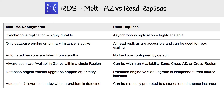When upgrades are occurring, it's going to happen on the primary database for Multi-AZ. When upgrades occur with Read Replicas, it's going to be independent from the source instance. And lastly, for failover: automatic failover will happen to the standby on Multi-AZ. For Read Replicas, you're not going to have automatic failover — you'll have to manually promote one of those replicas to become the standalone database.